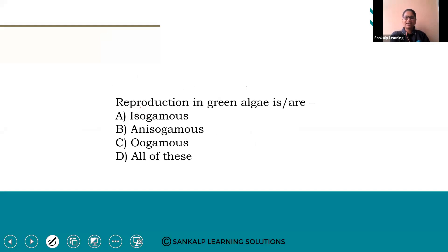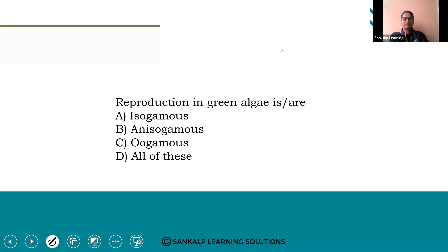Next question: reproduction in green algae is — isogamous, anisogamous, oogamous, or all of these. The right answer is option D — all of these.